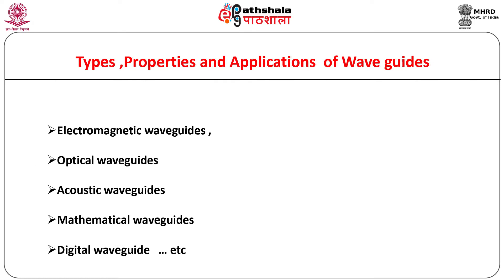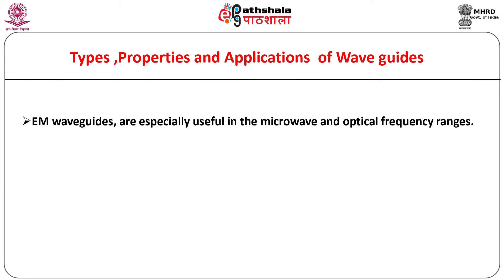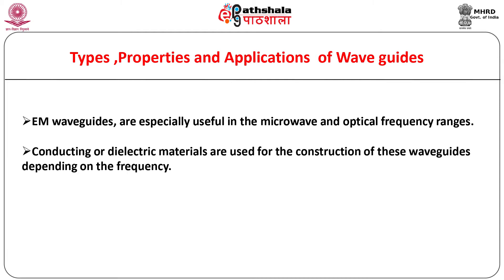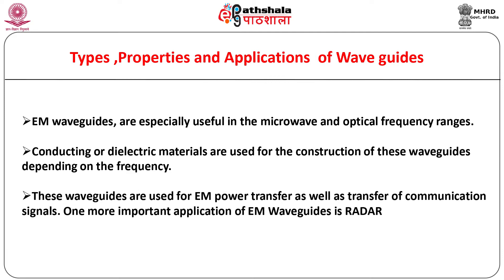A waveguide in two dimensions, called a strip line, can be developed on a printed circuit board for transmitting microwave signals. Waveguides of different types have been described in literature. Electromagnetic waveguides in principle can be constructed to carry electromagnetic waves over a wide portion of the electromagnetic spectrum. They are especially useful in the microwave and optical frequency ranges. Conducting or dielectric materials are used for their construction depending on the frequency, for both electromagnetic power transfer and transfer of communication signals.